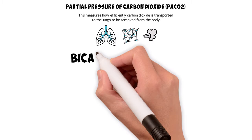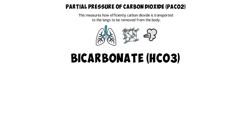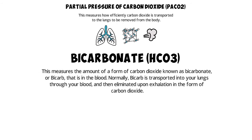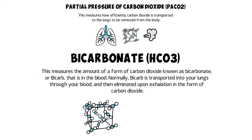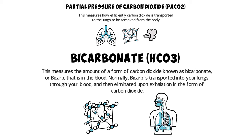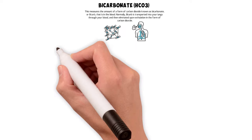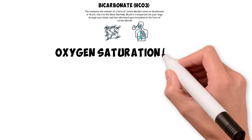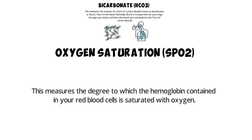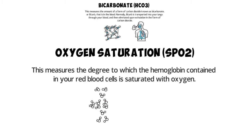Next, there is bicarbonate, or HCO3. This measures the amount of a form of carbon dioxide known as bicarbonate, or bicarb, that is in the blood. Normally, bicarb is transported into your lungs through your blood and then is eliminated upon exhalation in the form of carbon dioxide. And finally, there is oxygen saturation, or SpO2. This measures the degree to which the hemoglobin contained in your red blood cells is saturated with oxygen.